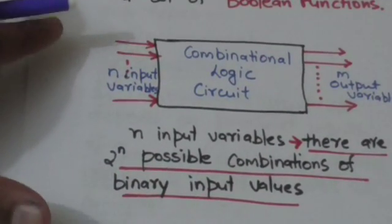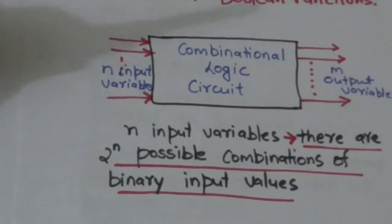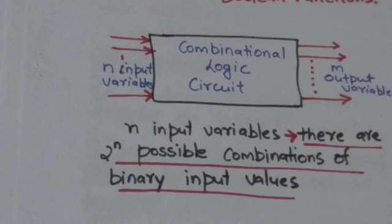For n input variables, there are 2^n possible combinations of binary input values, and for each possible input combination, there is only one possible output combination.